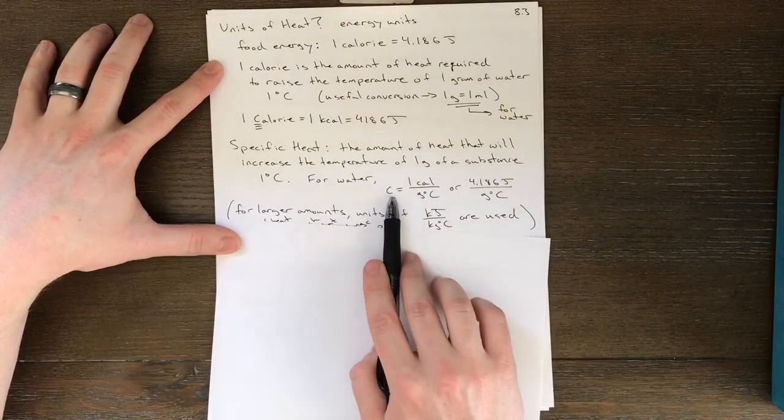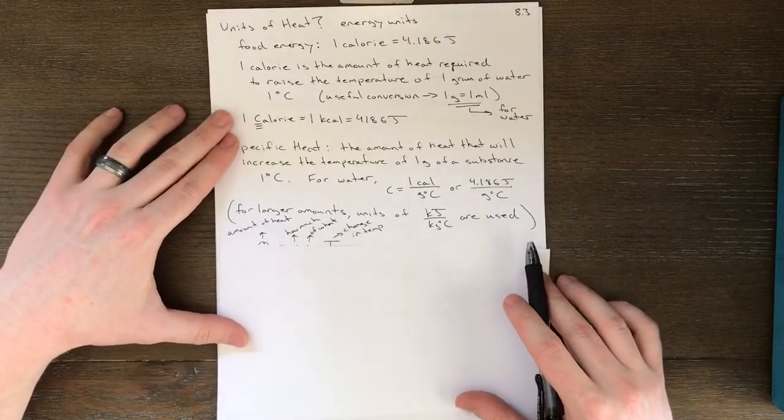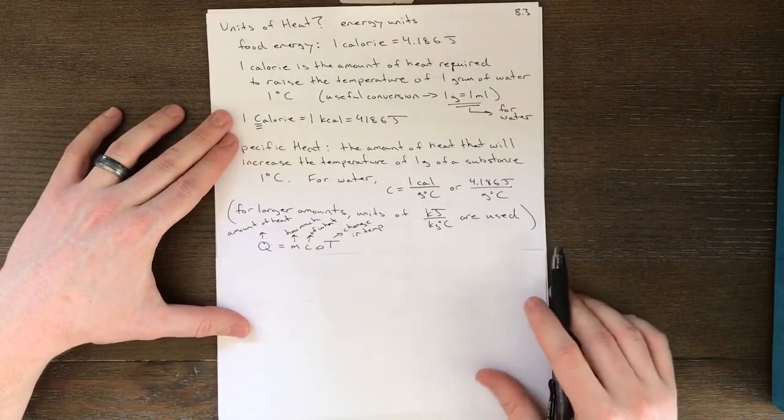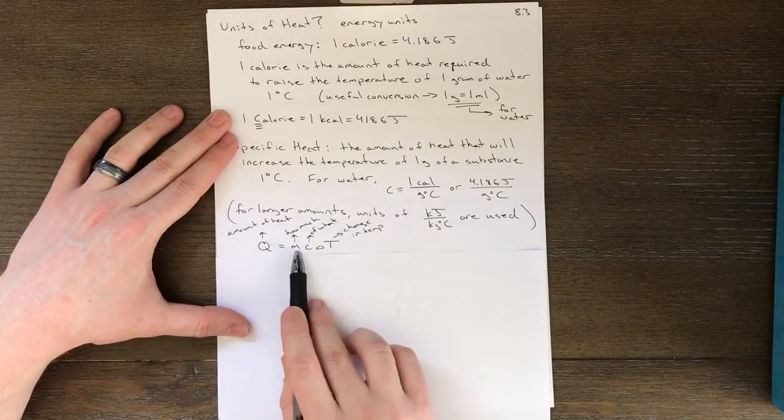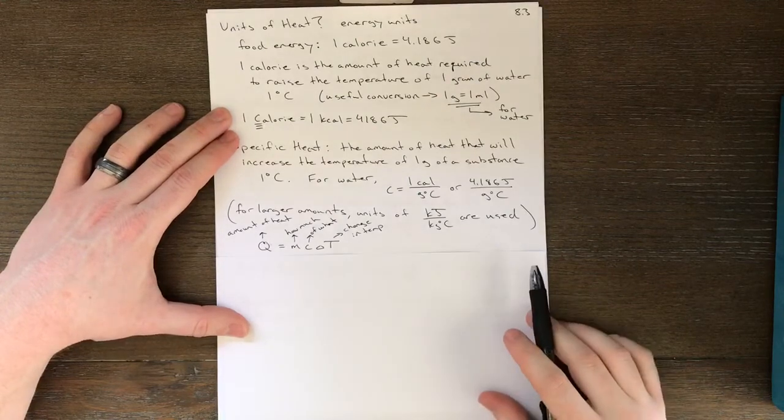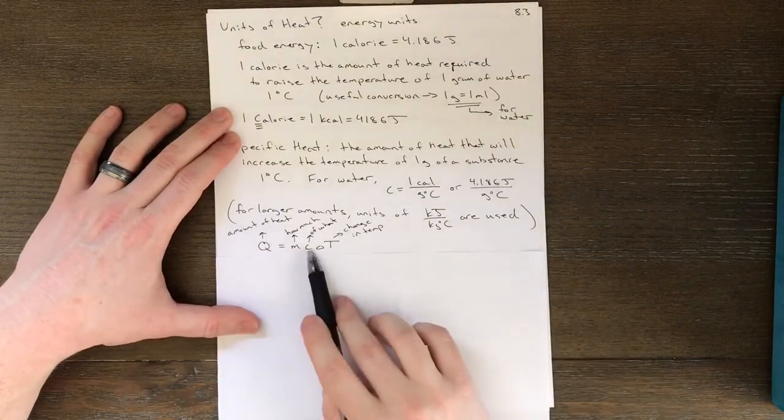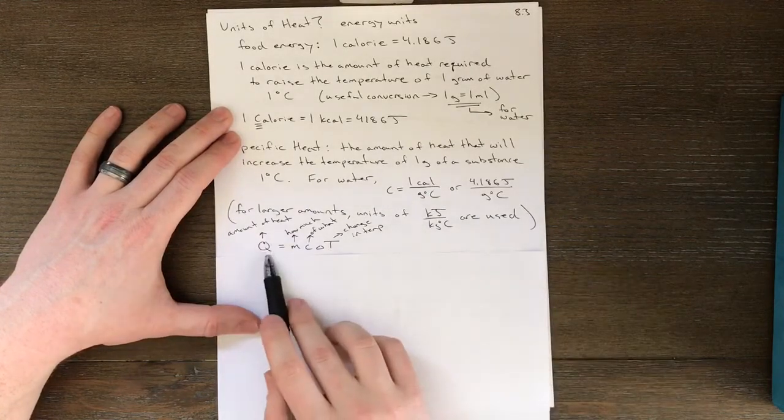All right, well, why did we define specific heat? We defined specific heat to prepare ourselves to define the most important equation from this chapter, q equals mc delta t. Now I'll pause to explain all of these things. So we needed c, specific heat, for this equation.